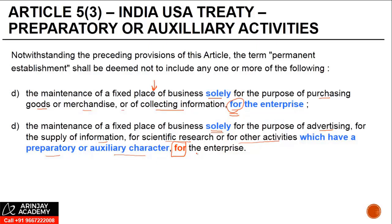What this means is you need to see the nature of business of the foreign company — see what are the other activities which are being carried out. Are these activities, vis-à-vis the nature of business, of a preparatory or auxiliary character? If yes, they are excluded from the definition of PE.